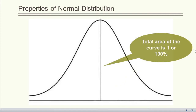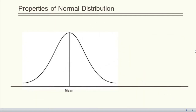The total area under the normal curve is 1, or 100%. Since the curve is symmetric, the area on either half is 0.5, or 50%. The shape of the normal distribution depends on its mean and variance. The mean tells us about the center of the distribution, while the standard deviation decides the flatness or peakedness of the curve.